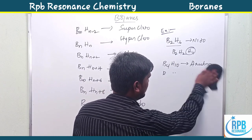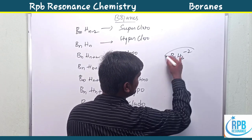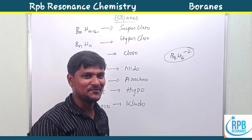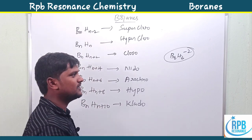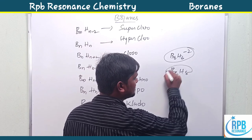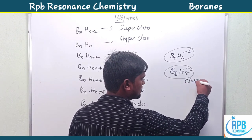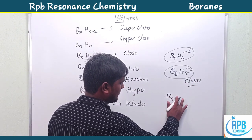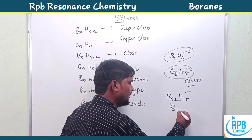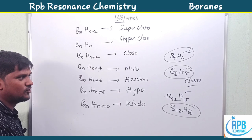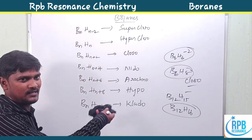Some students are worried about anionic borane species like B6H6²⁻. The negative charge means loss of protons. So the parent component of B6H6²⁻ is B6H8, which has two more hydrogens — making it closo type. Similarly, B12H15⁻: the parent component is B12H16, which falls under nido type structure.